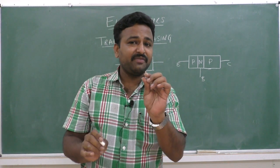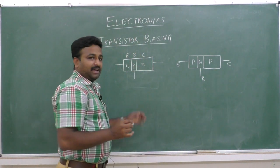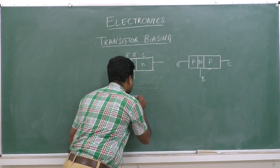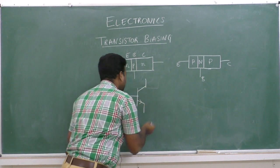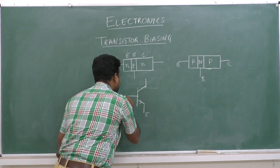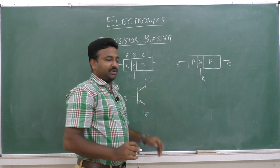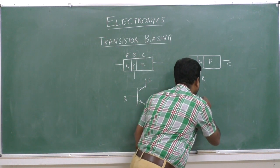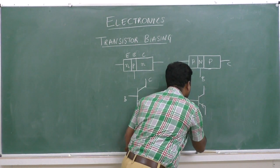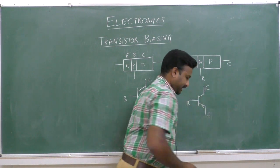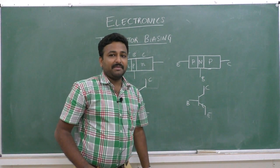They look similar, but there is a small difference to identify whether the transistor is PNP or NPN. Let us see the circuit symbol of the NPN transistor first. This is the circuit symbol of the NPN transistor — with emitter region, base terminal, and collector terminal. And this is the circuit symbol of the PNP transistor.